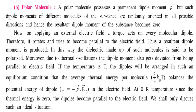For polar molecules, they possess a permanent dipole moment P — they have charges −Q and +Q separated by a certain distance. However, the dipole moments of different molecules are randomly oriented in all possible directions, so the resultant dipole moment is essentially zero. When we apply an electric field, a torque acts on every molecular dipole.